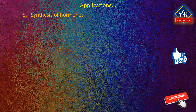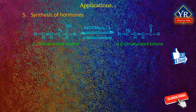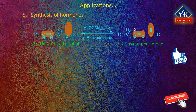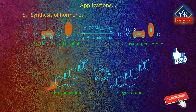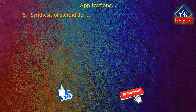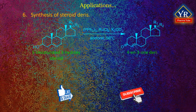Synthetic application 5: In the synthesis of hormones. The beta-gamma unsaturated alcohols undergo oxidation with migration of the double bond to form alpha-beta unsaturated ketones. This reaction finds numerous applications in steroid chemistry. The Oppenauer oxidation is also used to synthesize hormones. Progesterone is prepared by the Oppenauer oxidation of pregnenolone. Synthetic application 6: In the synthesis of steroid derivatives. A slight variation of the Oppenauer oxidation is also used to synthesize steroid derivatives.